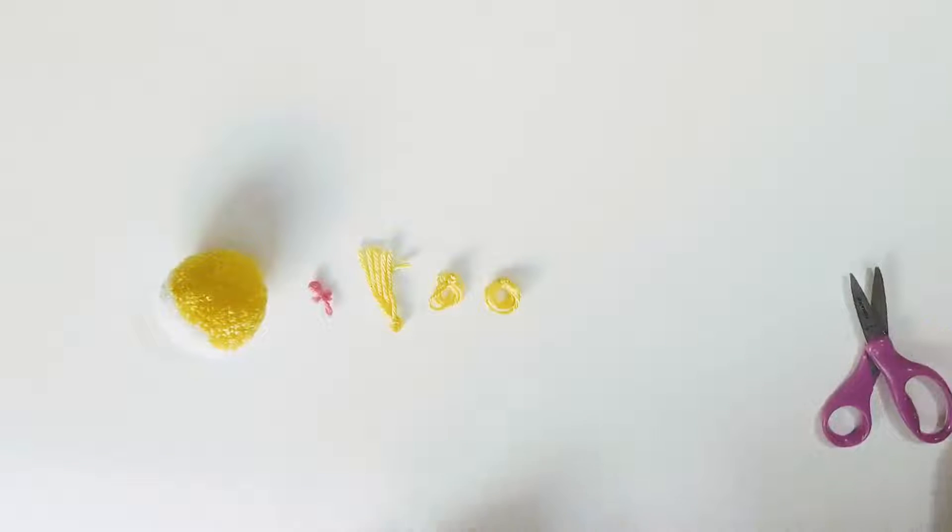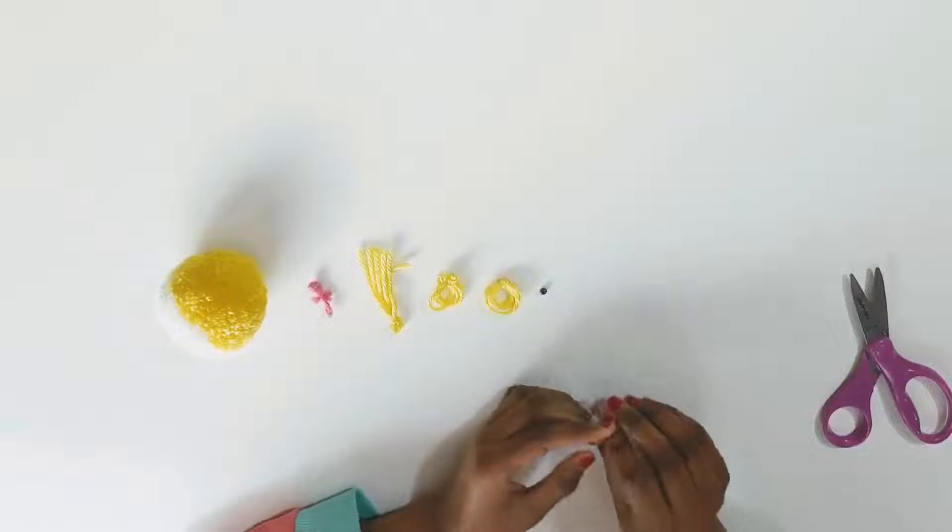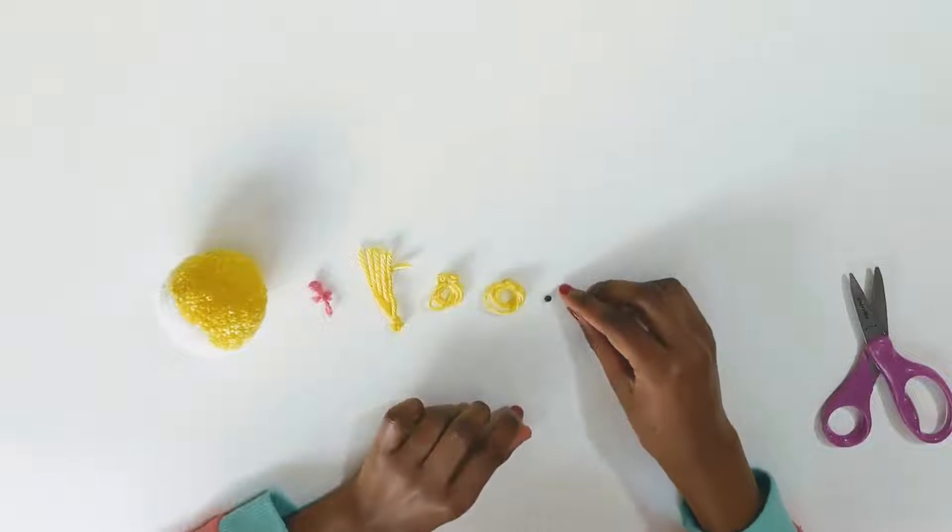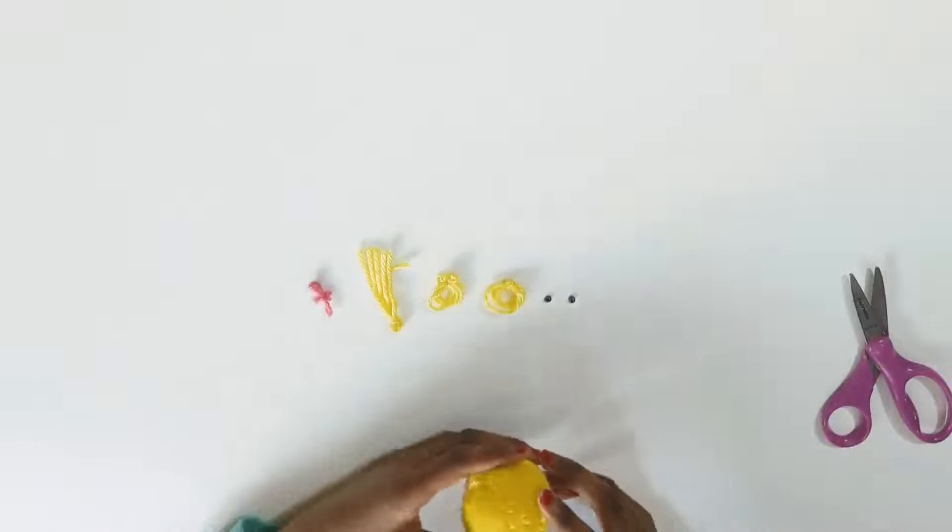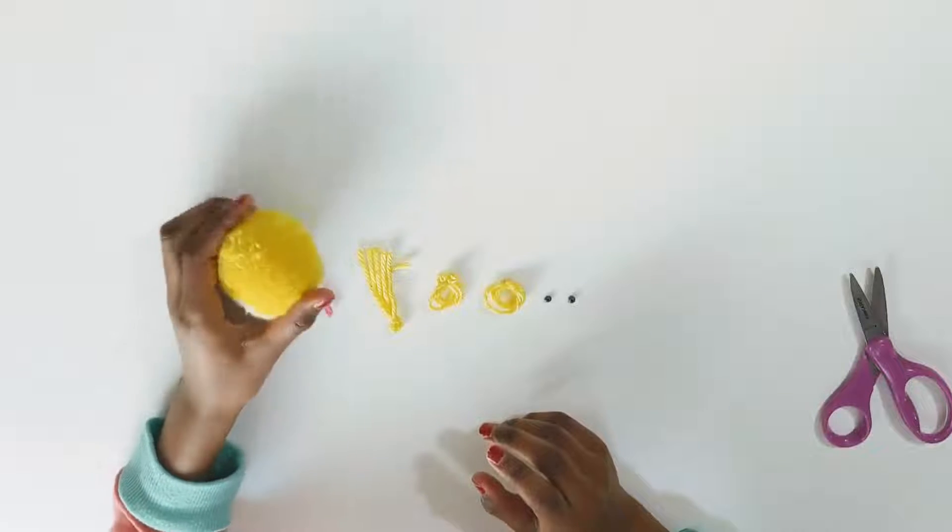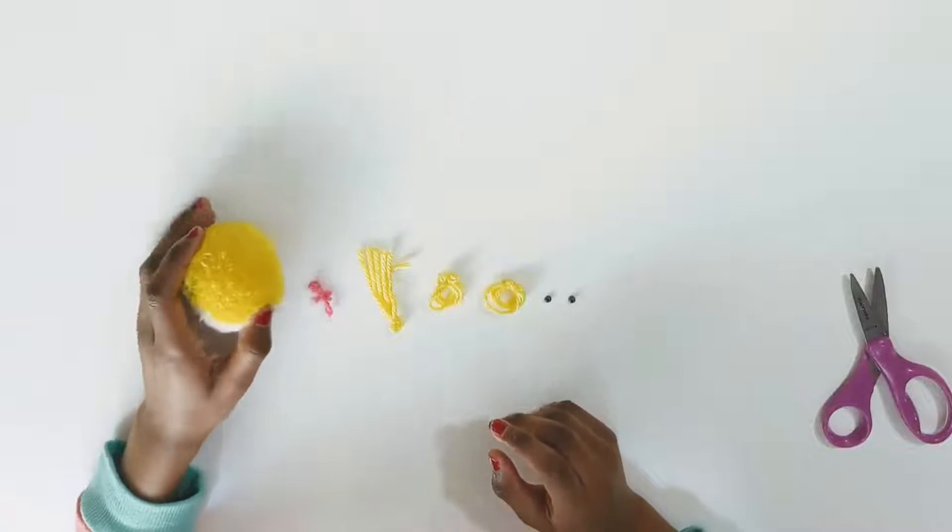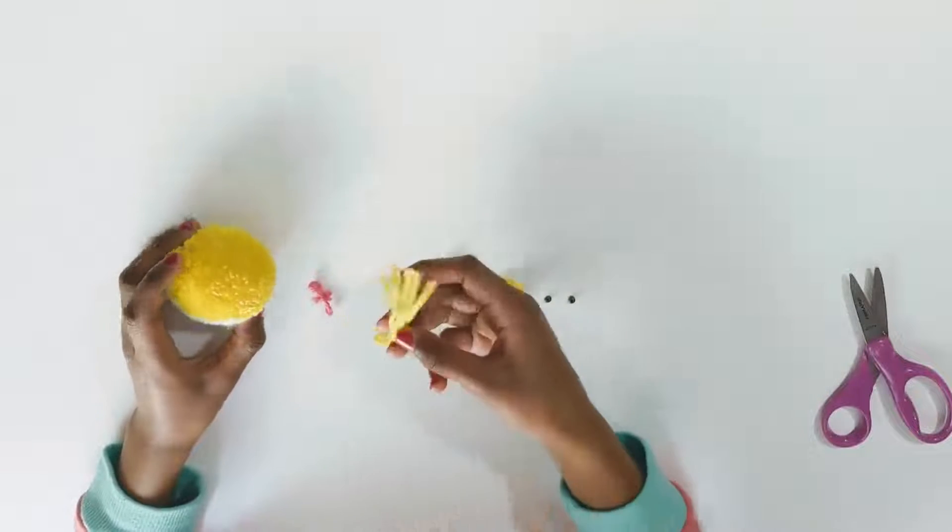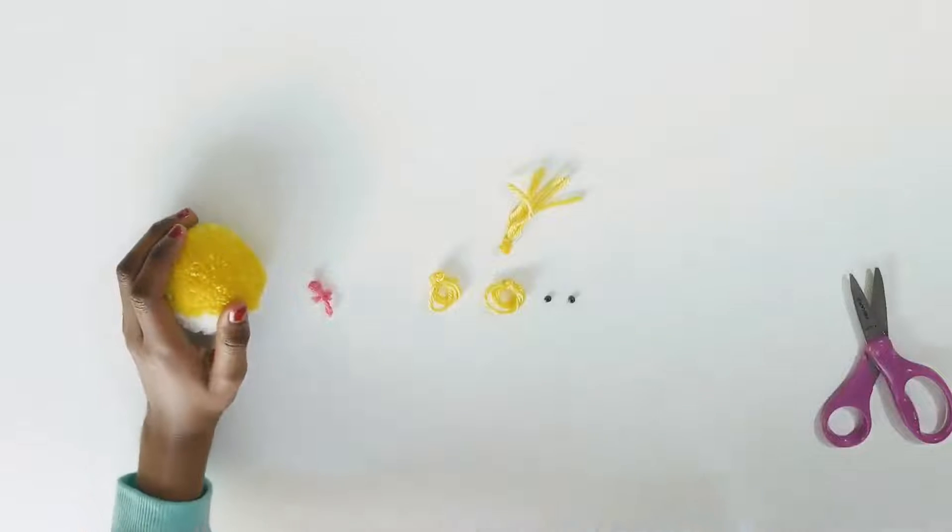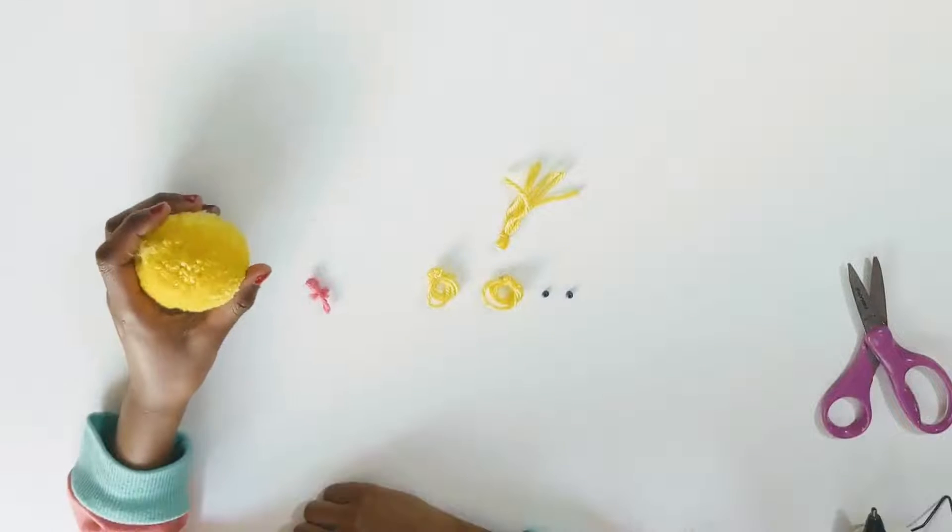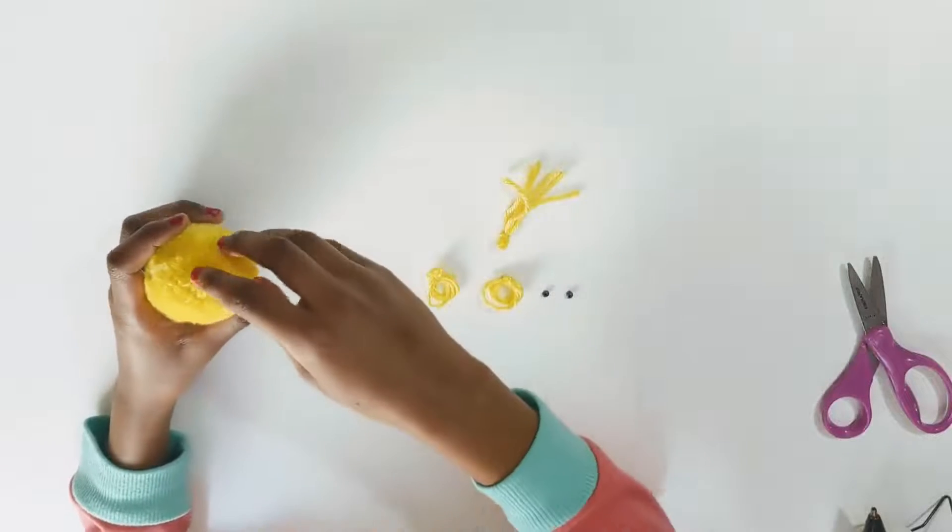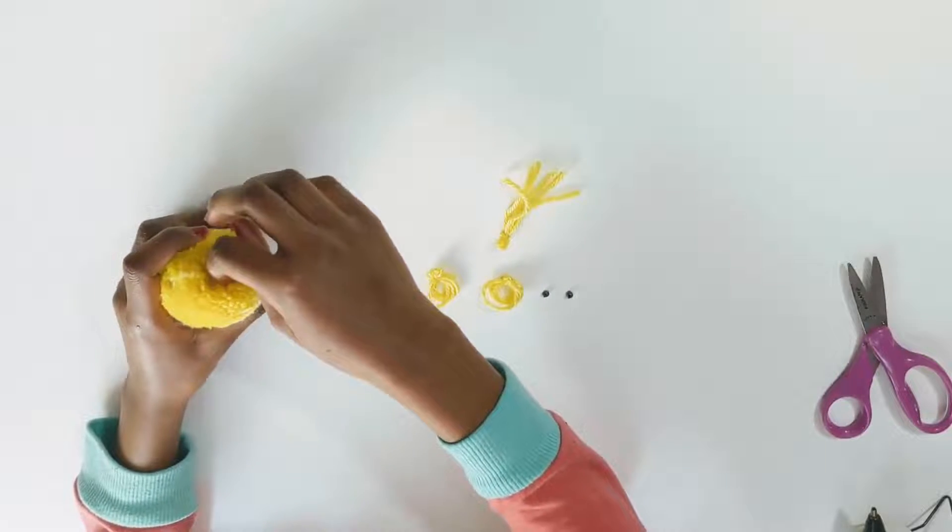For the eyes, you can use some black beads. Now it's time to start gluing everything on. We'll start with the hair since it's easiest because it's right on top. Take a glue gun and make a little hole with your fingers on top.